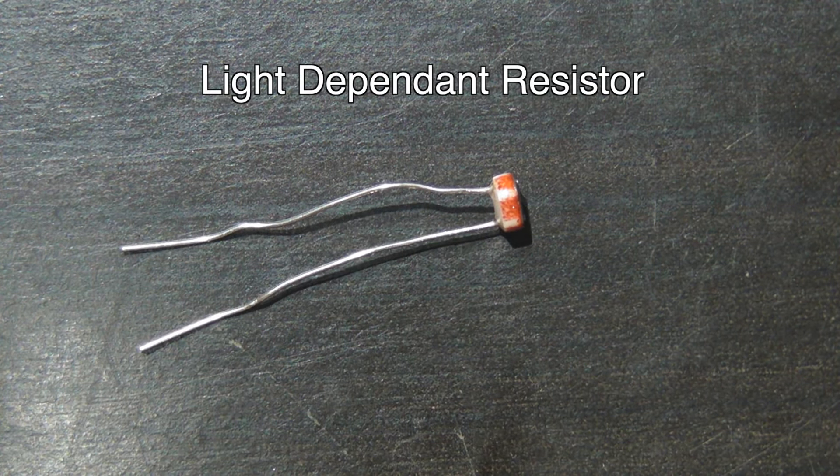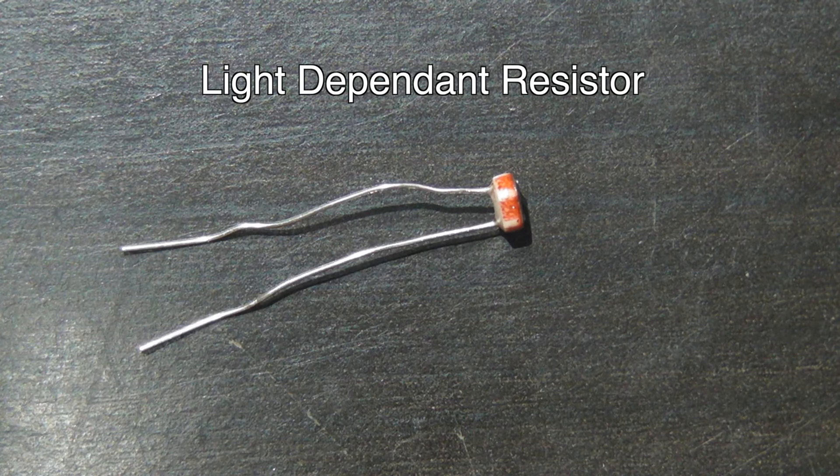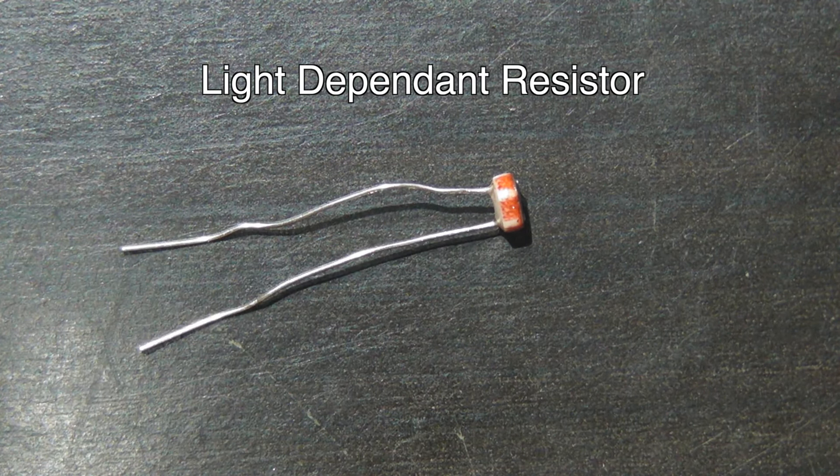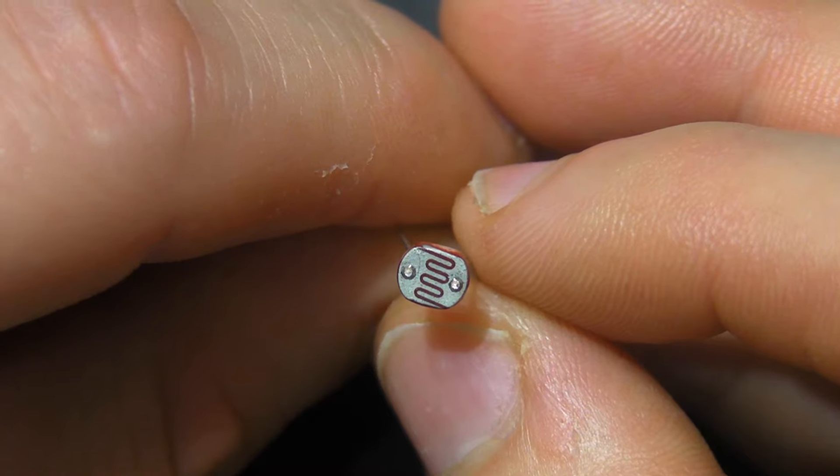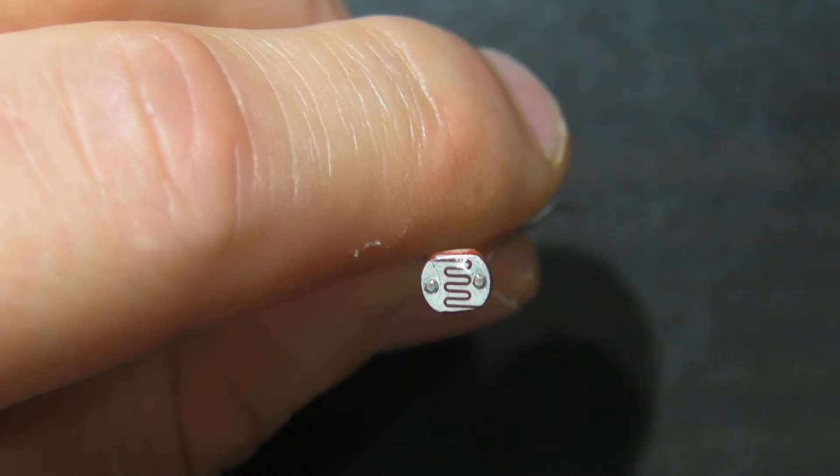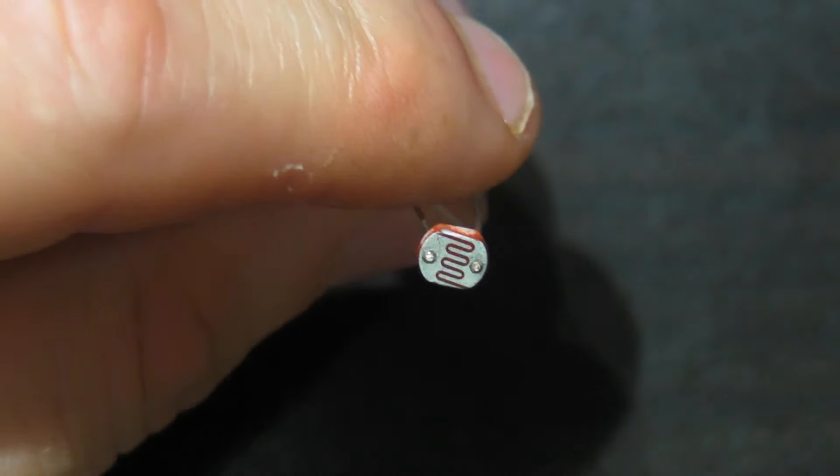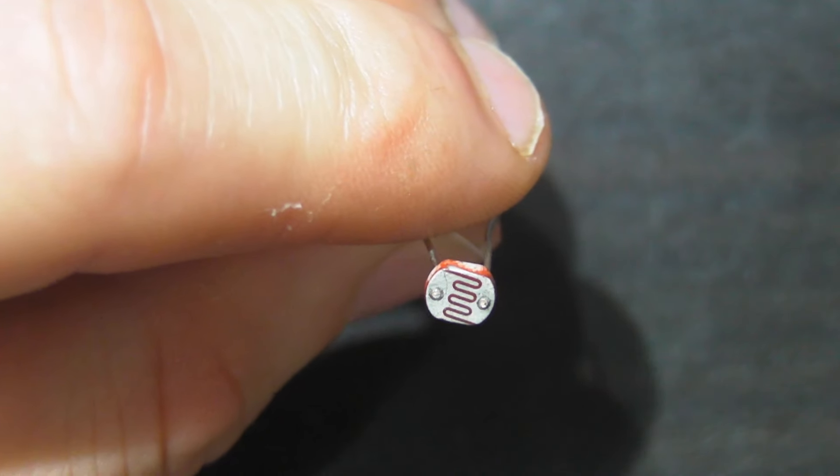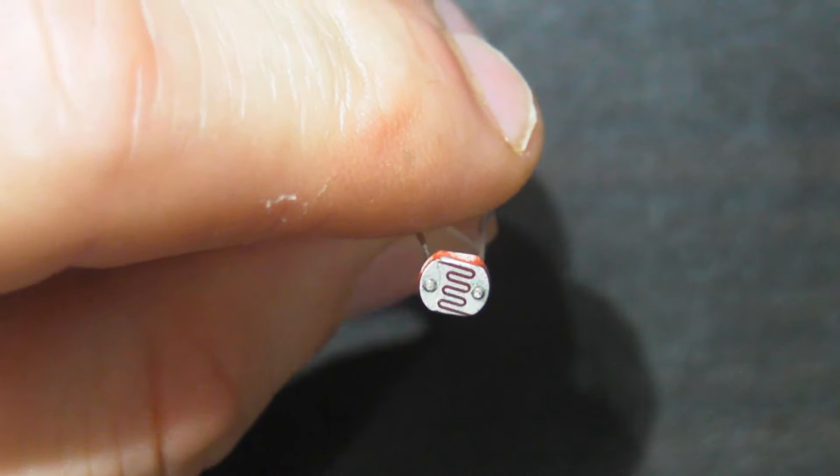And this component is a light-dependent resistor, otherwise known as an LDR or a photoresistor. There are many different types of photoresistor, but they will generally have this kind of look. The clue as to what they do is reflected in its name. It is a resistor that is light-dependent.